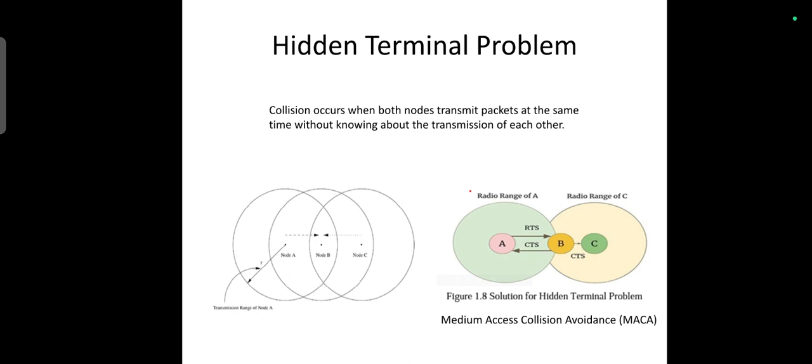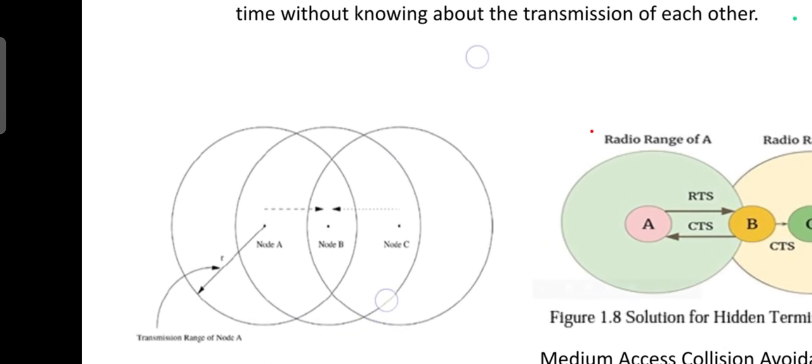In simple words, the collision occurs when both nodes transmit packets at the same time without knowing about the transmission of each other. This can be explained with the help of a small example network.